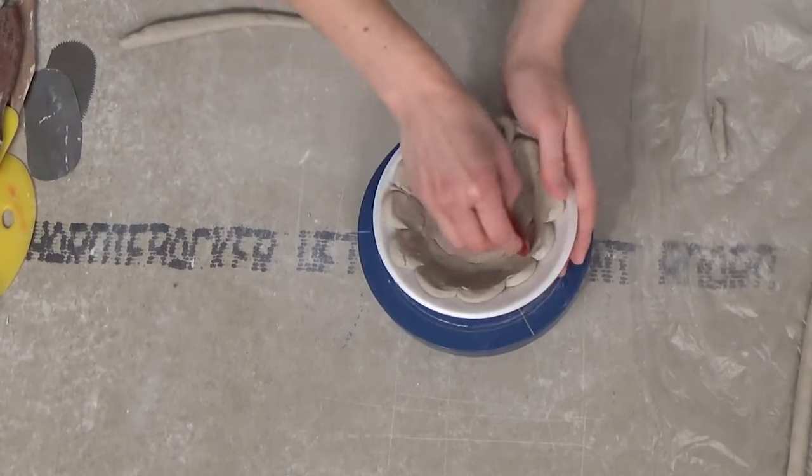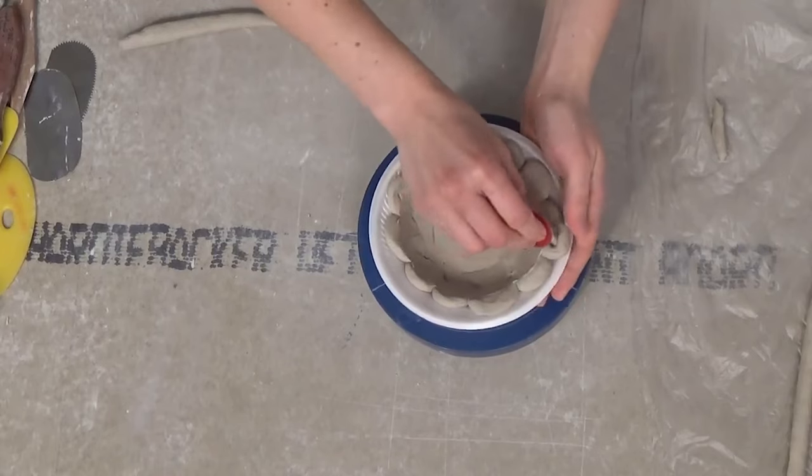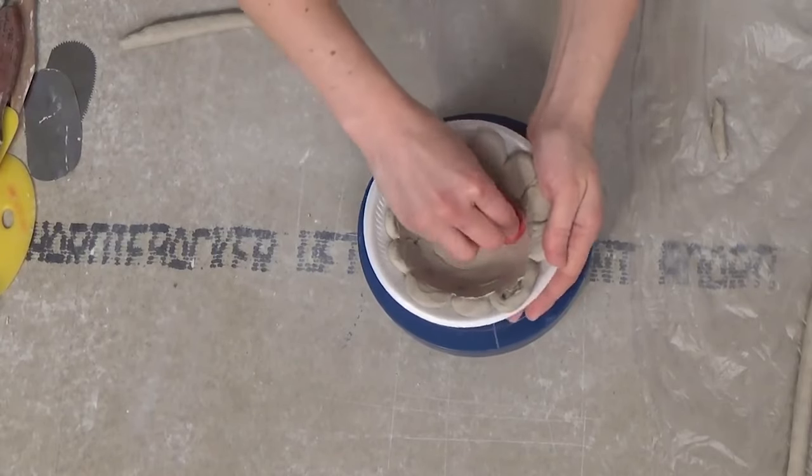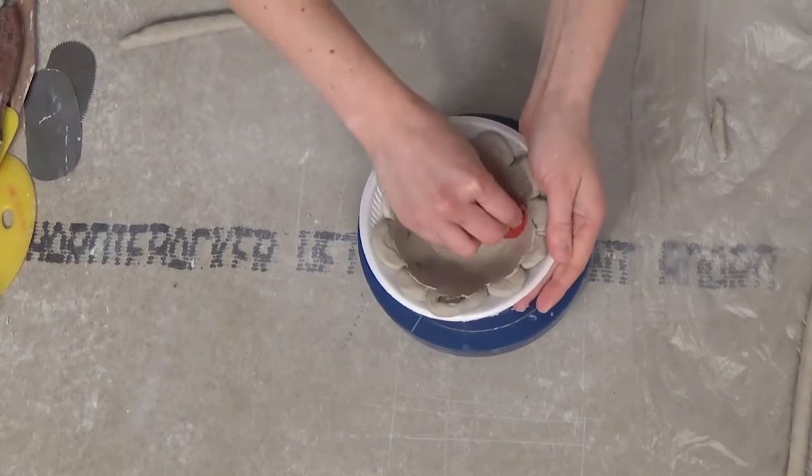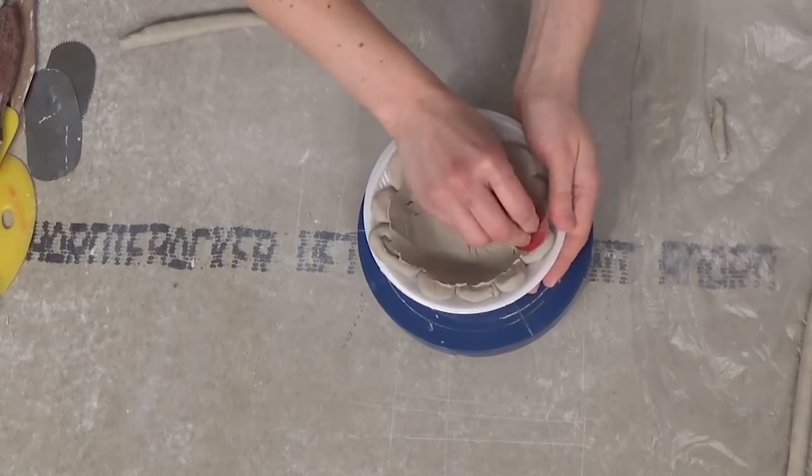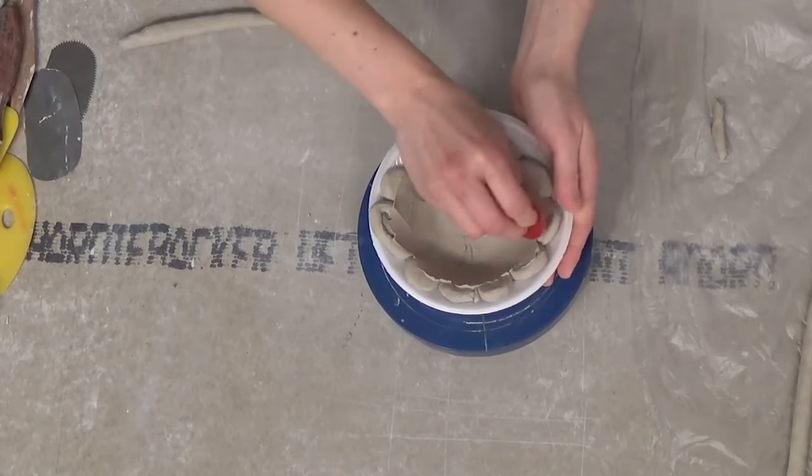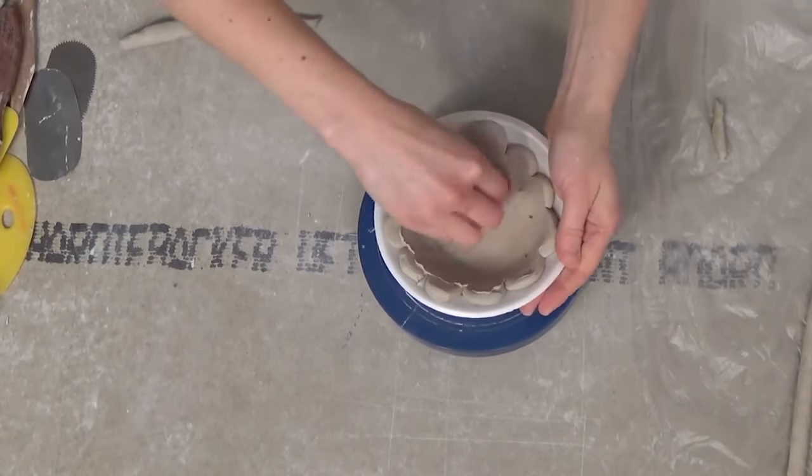If you didn't care if it was functional, then you could just leave these and not need to compress it. But if you want it to be able to hold liquid or anything like that, then you're going to want to make sure and smooth this out on the interior.